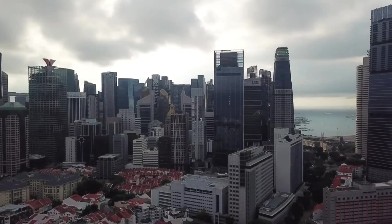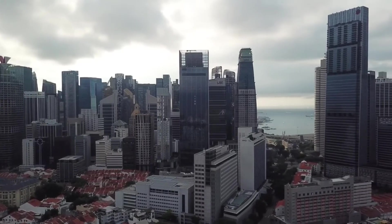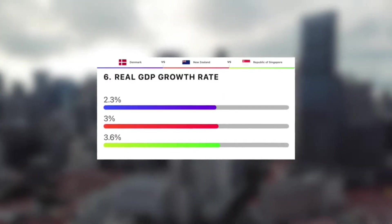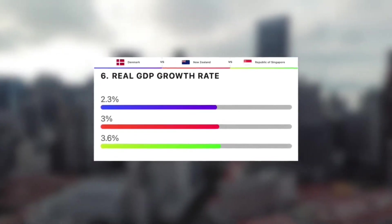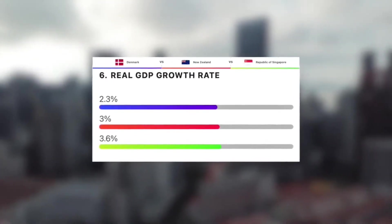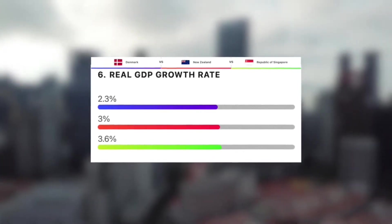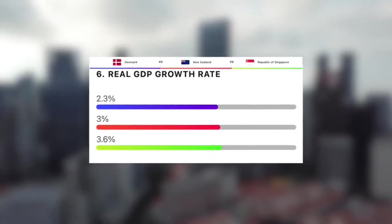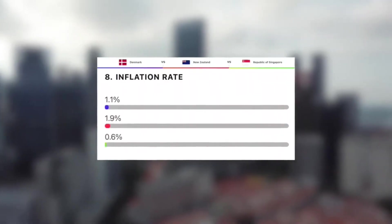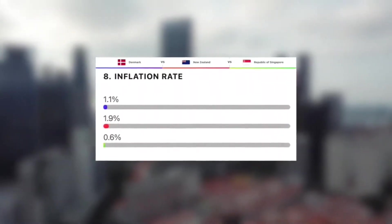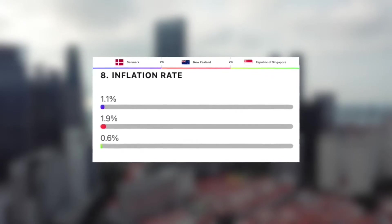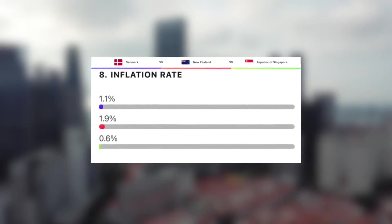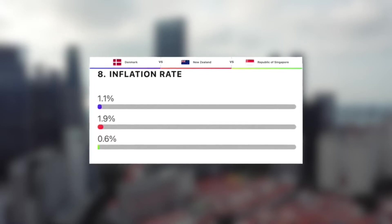Now let's take a look at the GDP growth rate for these three countries. With 2.3%, Denmark actually has the lowest out of the three. Next we have New Zealand at an impressive 3% growth rate. And then, to no surprise, Singapore takes the win here with 3.6%. These three nations all have super impressive inflation rates, with New Zealand having the highest at 1.9%, followed by Denmark at just 1.1%, and then incredibly Singapore at just 0.6%.